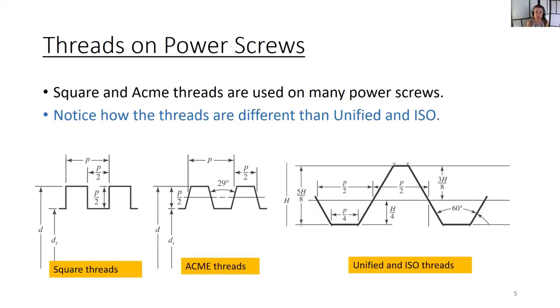Let's talk about the threads on power screws. Square and acme threads are commonly used. Square threads look like a square wave, and acme threads have a 29 degree thread angle. Notice how the threads are different from unified and ISO. Unified and ISO threads found on common fasteners have a 60 degree thread angle.